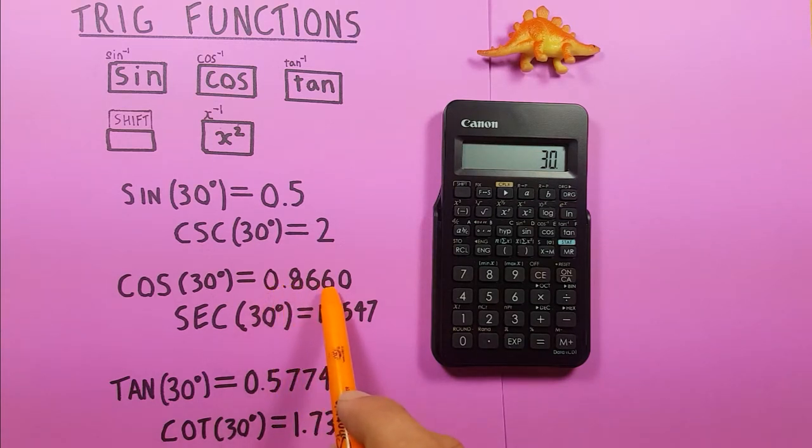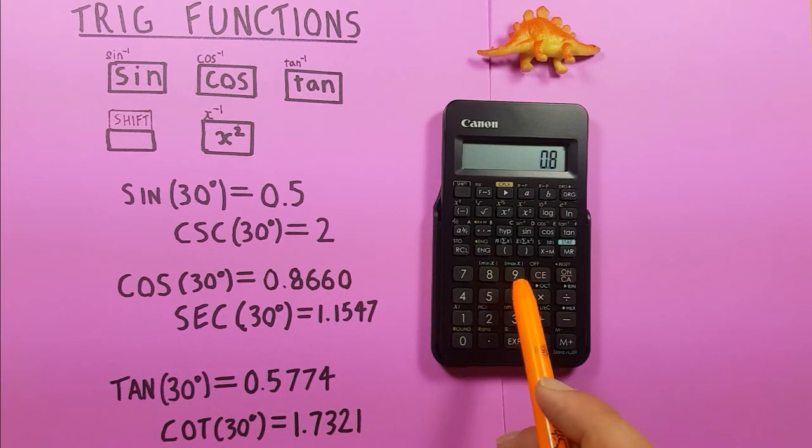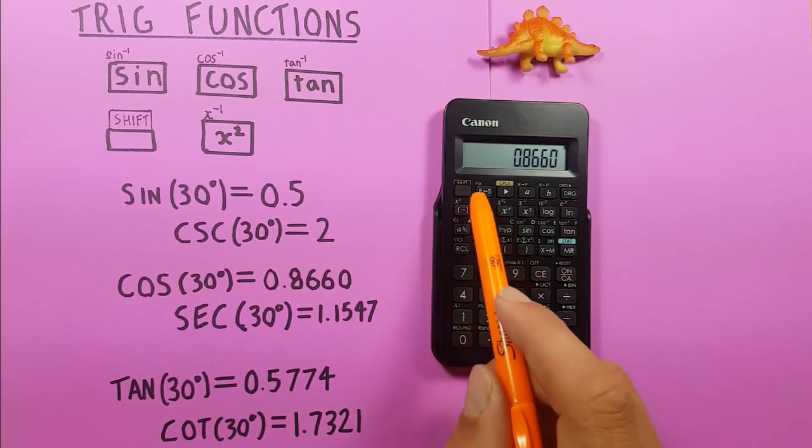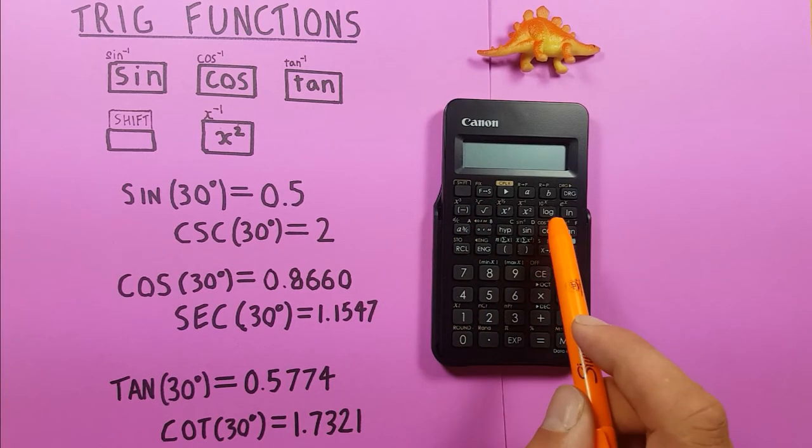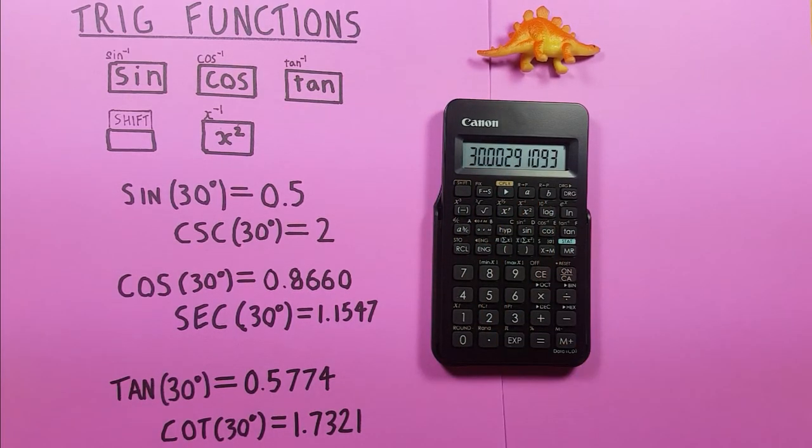For the arc cos remember we got rounded 0.8660 so we place that on the screen. Press shift cos and this gives us what would round to 30 degrees.